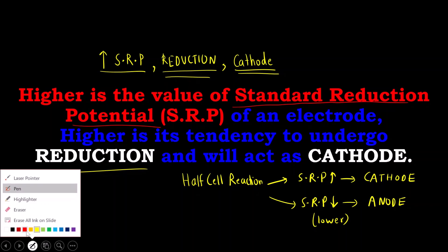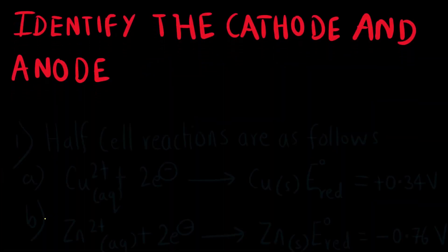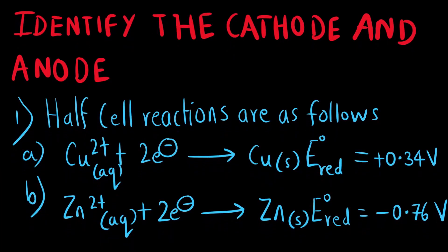Let us try to understand this with the help of an example. Identify the cathode and anode — this is the first question. The half-cell reactions are as follows.